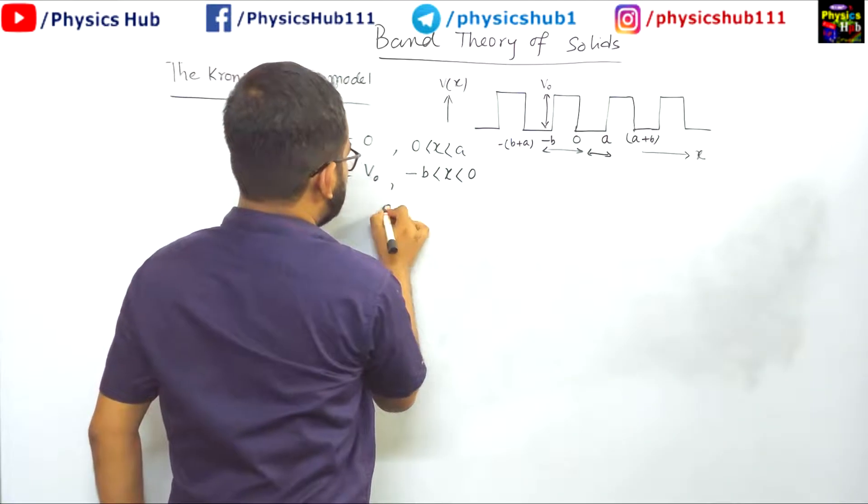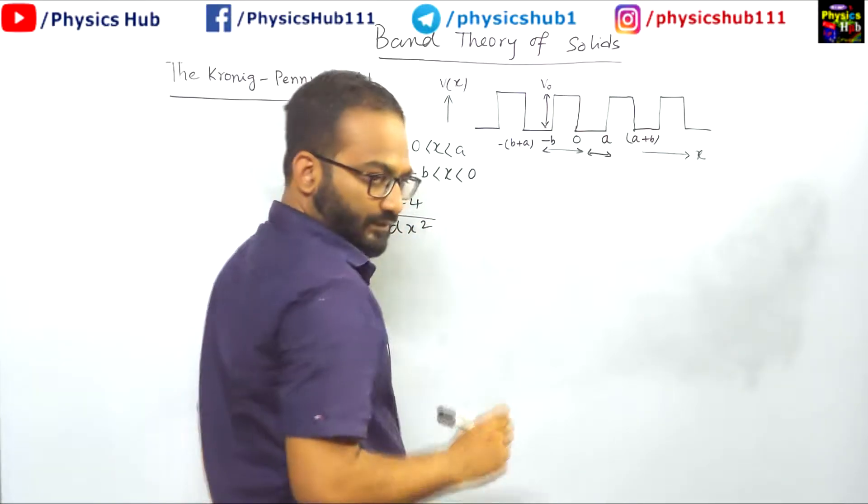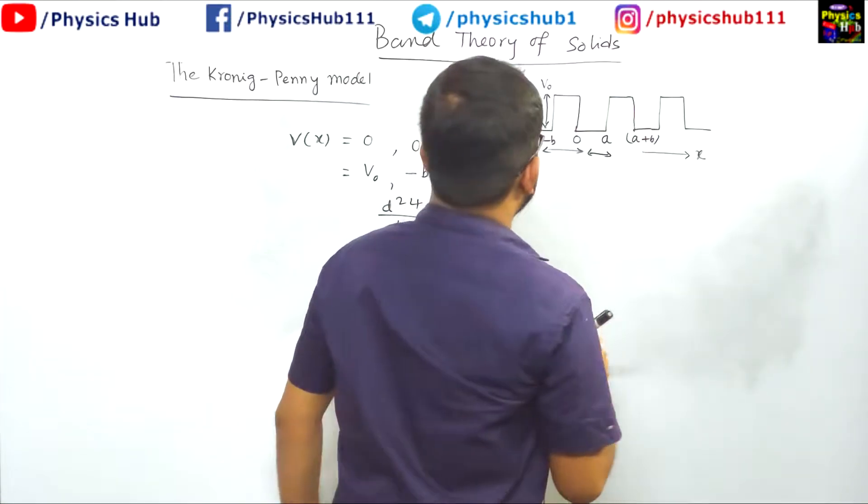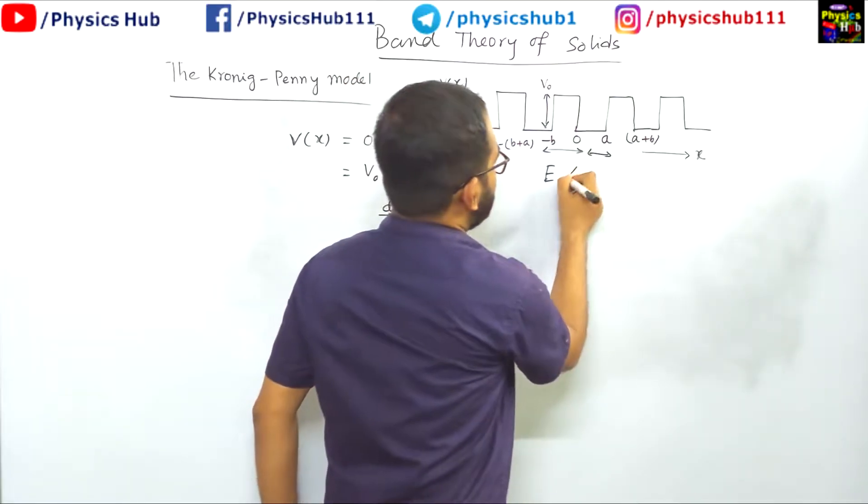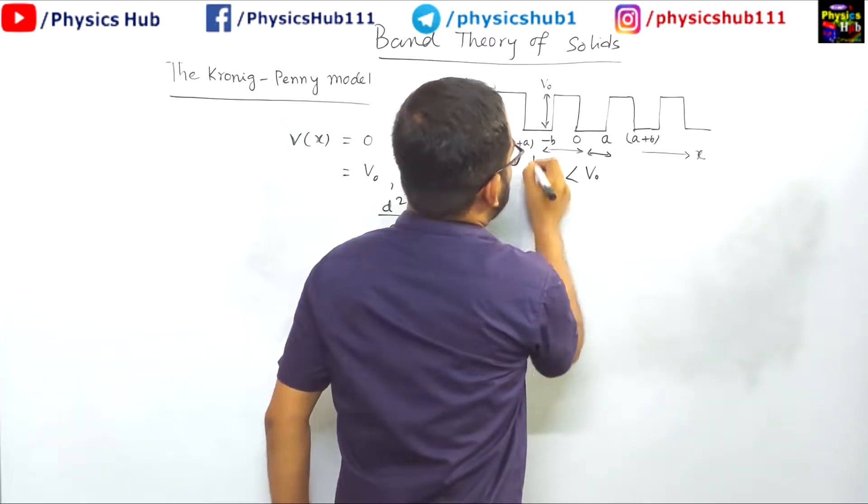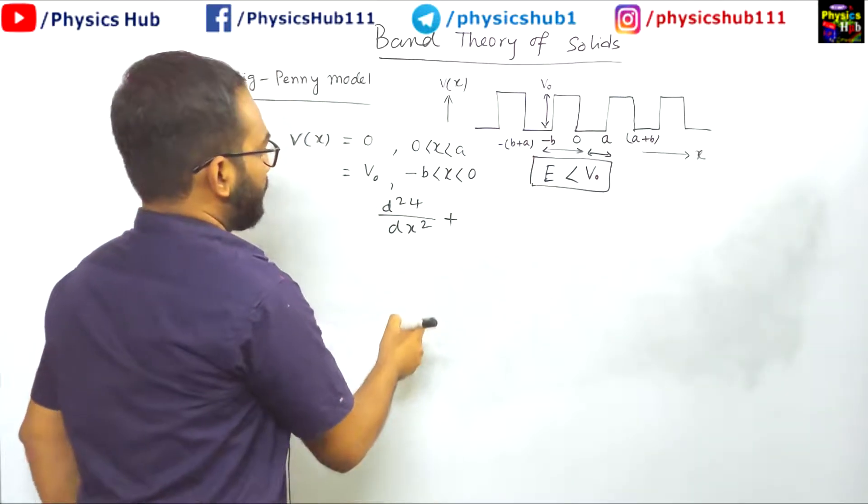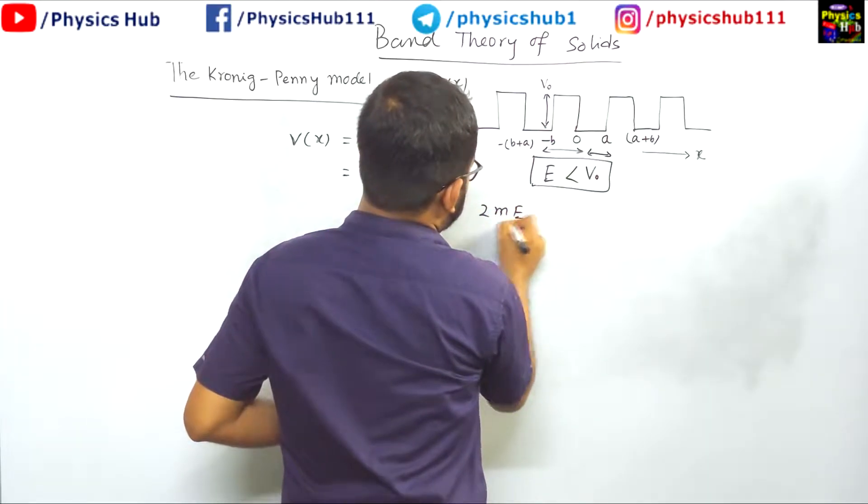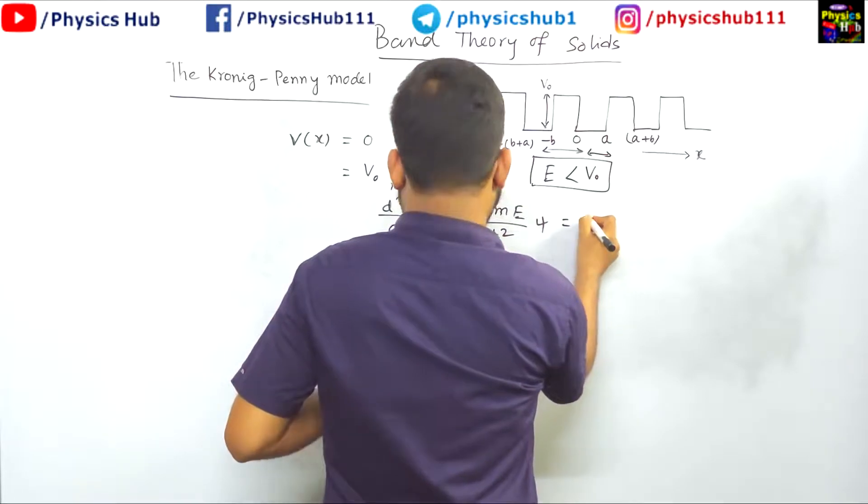So you know we are writing this form of Schrödinger equation d²ψ/dx² plus, and one thing we are considering that the energy of the electron E is less than this potential V₀. So we are considering this case and for that we will get for 0 potential it is 2mE/ℏ² into ψ equals 0.